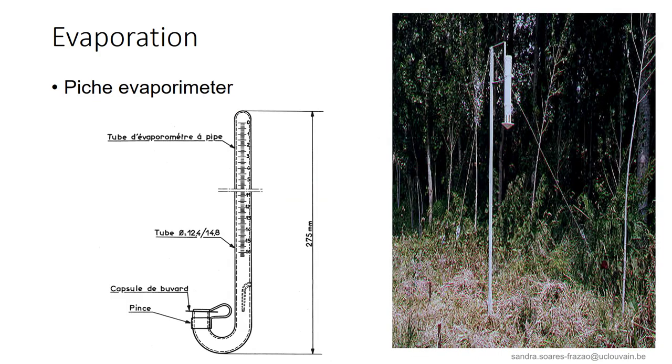Evaporation can be measured, for example, using the Piche evaporimeter, that is a curved tube filled with water and covered with blotting paper. So, the water that evaporates from the paper is lost and the amount of water in the tube decreases. Consequently, the level in the tube provides a measurement of the potential evaporation.